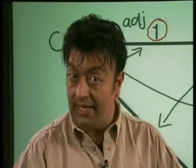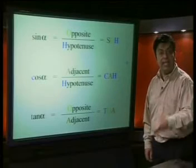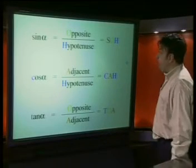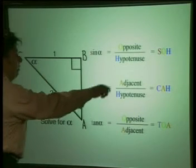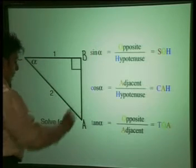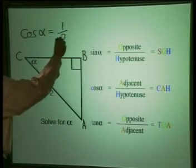Now we know the lengths of the adjacent side and the hypotenuse, so we can use normal trig ratios — SOHCAHTOA. Using SOHCAHTOA, we can see that cos alpha is equal to adjacent divided by hypotenuse. If we fill in the values we know, we get cos alpha is equal to a half. So now we have the equation cos alpha equals a half, and we can use the calculator to solve for alpha.